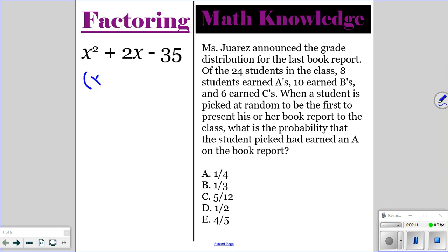So for the factoring, you should have x plus 7 times x minus 5. For the math knowledge question, we want to know what the probability is that a student had earned an A on the book report.